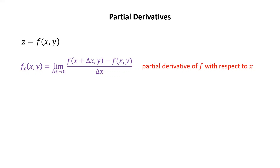And that's exactly what's happening. When we take a partial derivative of a function of two variables with respect to x, we're essentially just differentiating just like we would in single variable calculus, thinking of x as the variable and pretending that y is a constant. So in practice for elementary functions, you don't actually have to use this definition to compute a partial derivative with respect to x — you could just differentiate the way you would in single variable calculus, pretending y is constant.